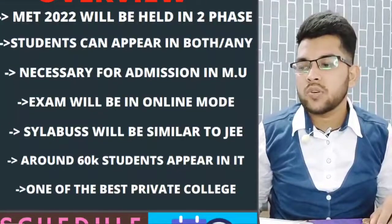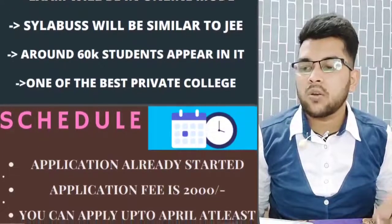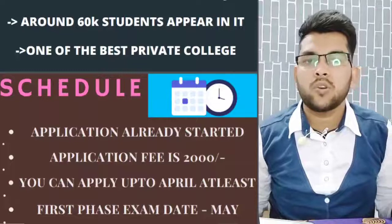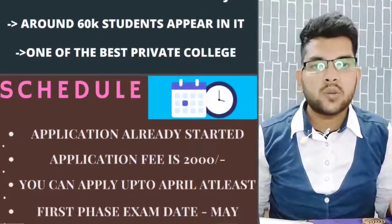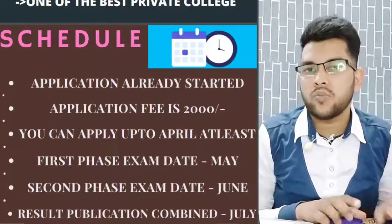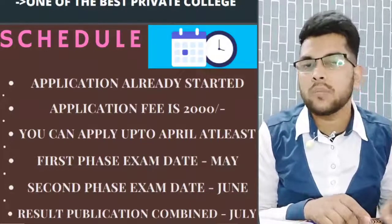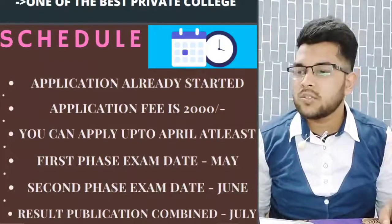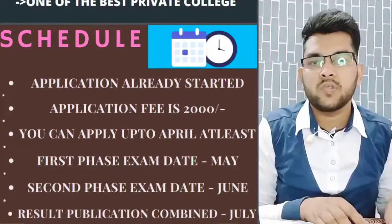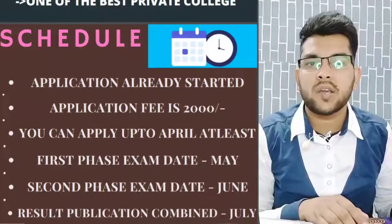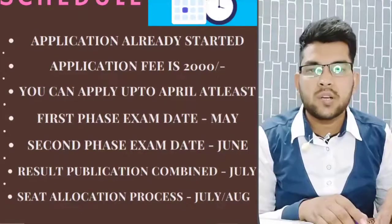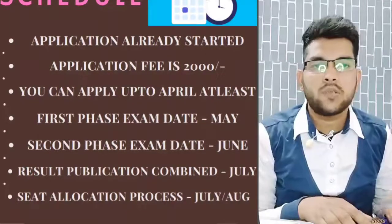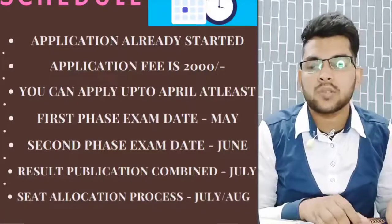Regarding the schedule: the application has already started from 9th December. You can fill the application form on the official website. The application fee is ₹2,000 per student. You can apply up to approximately April — there is no fixed last date but based on last year, expect up to April. The first phase exam will be in May, the second phase in June, results will be published in July, and counseling is expected to begin from the last week of July or first week of August.